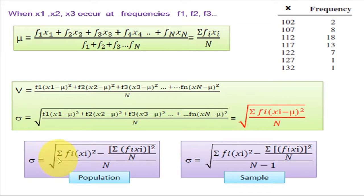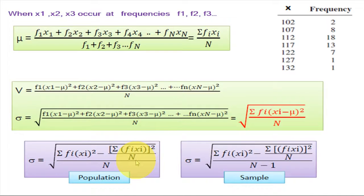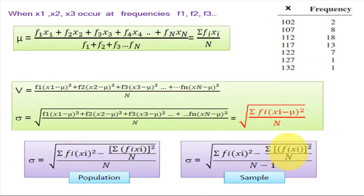If we modify this formula, we ultimately get: standard deviation = square root of [summation of fi·xi² − (summation of fi·xi)² / N] upon N. This formula is for the population. If you consider a sample for more accuracy, standard deviation = square root of [summation of fi·xi² − (summation of fi·xi)² / N] upon (N − 1). This formula is used while calculating standard deviation for sample data.